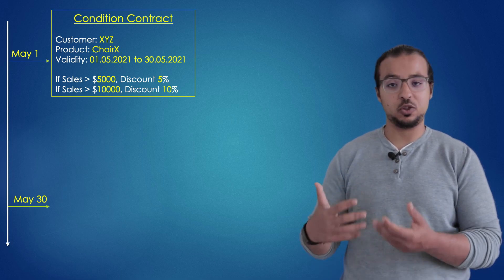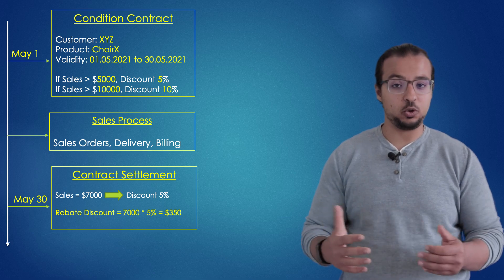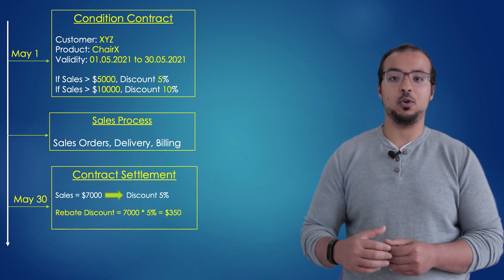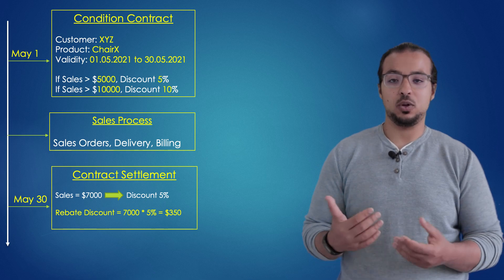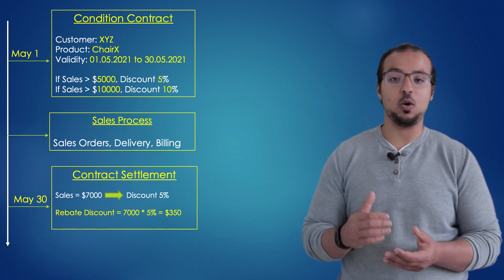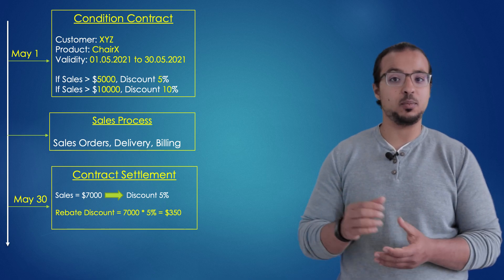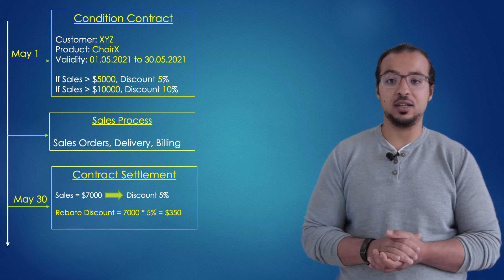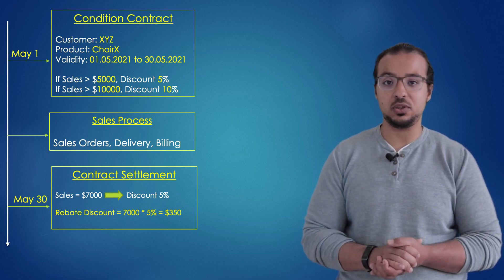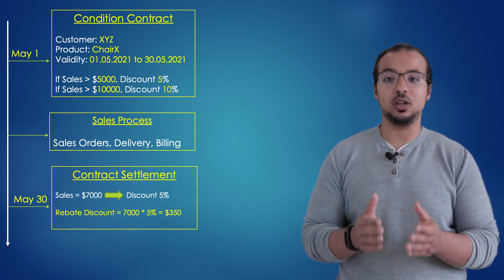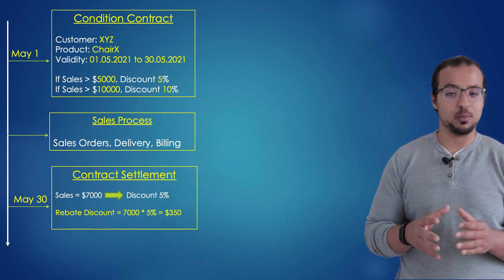Then within the month, the customer is going to buy the product from me. And at the end of the month, at the end of the contract, I'm going to check his account and see what number he achieved. Let's say he achieved a total of 7,000 USD — so he is entitled to a 5% discount. We multiply 7,000 by 5%, which gives us 350 USD. This amount we are going to deduct from the balance of the customer.